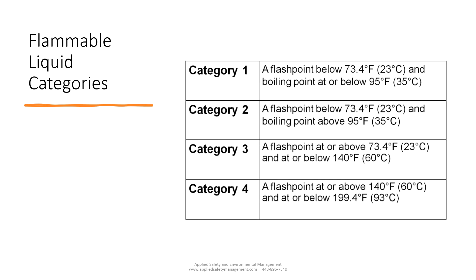Category 1 has a flashpoint below 73.4 degrees Fahrenheit and a boiling point at or below 95 degrees Fahrenheit. We'll cover a couple of the common chemicals, fuels, and paints found in the workplace in the next couple of slides.